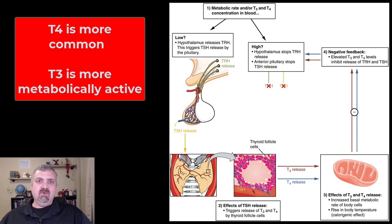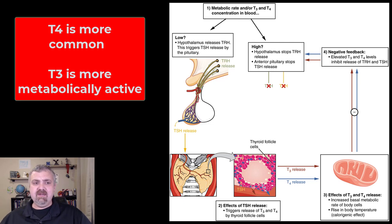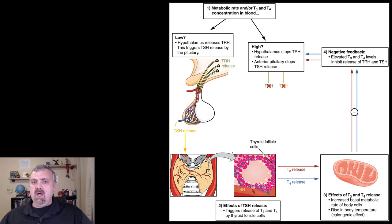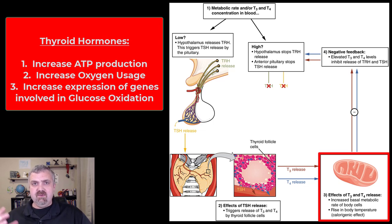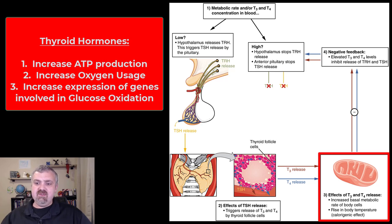When your body needs it, it will take it off of that transport protein and activate it, hopefully converting it to the more metabolically active T3. Thyroid hormones are unique because even though they are made of amino acids, they are lipid soluble — it has to do with their structure. They enter the cell, and if they attach to receptors on the mitochondria, which you can see here on the right-hand side, they will increase oxygen utilization and fuel utilization — you will burn more fuel.